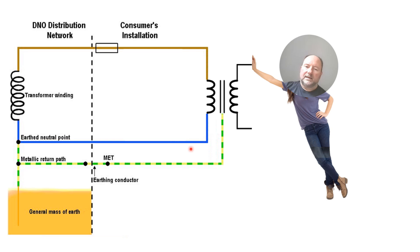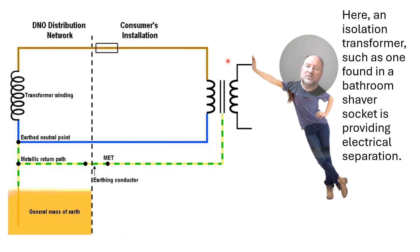On the drawing here, we have our Earth system as we had before. And we described how the shock would take its path through the general mass of Earth and end up back at this Earth neutral point of the transformer distribution, transformer secondary winding and then go through the winding itself and down the line conductor back to the point of contact. Well, here instead, we're going to use an isolation transformer such as one that you'll find in a shaver socket.